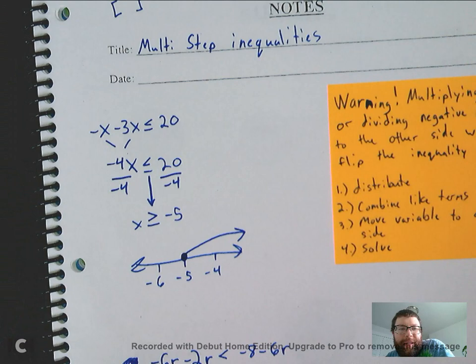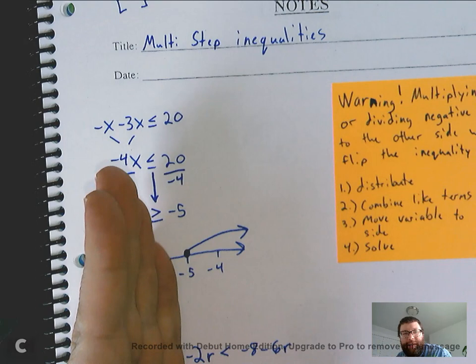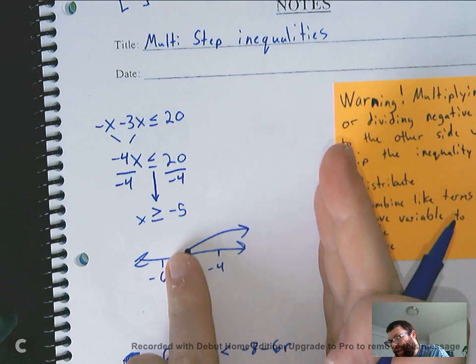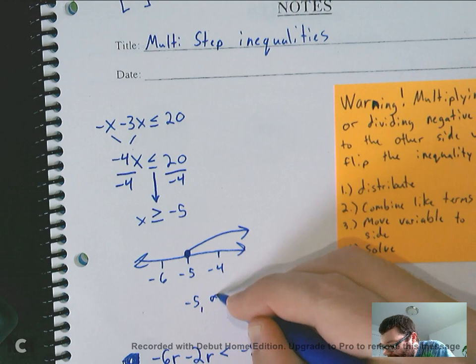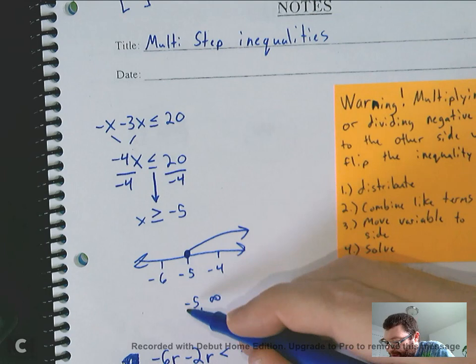And then you do your interval notation again. Interval notation is just the least number, greatest number. Usually easiest to look at the graph for that. If the least number is the circle, and the greatest number is going off forever to the right, we would have negative 5 and positive infinity. Because to the right is the positive direction. This is a closed circle, negative 5, so it's going to have a bracket.